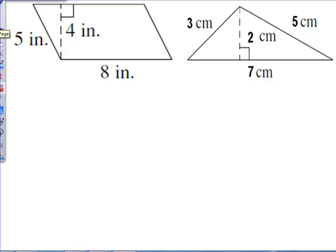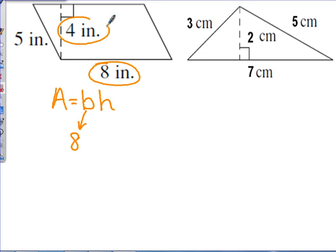Our first figure, the parallelogram. We use the formula area equals base times height. Our base for this parallelogram is 8, and our height is a measurement that's perpendicular to the base, which is 4. 8 times 4 is 32 inches squared. So our area equals 32 inches squared.